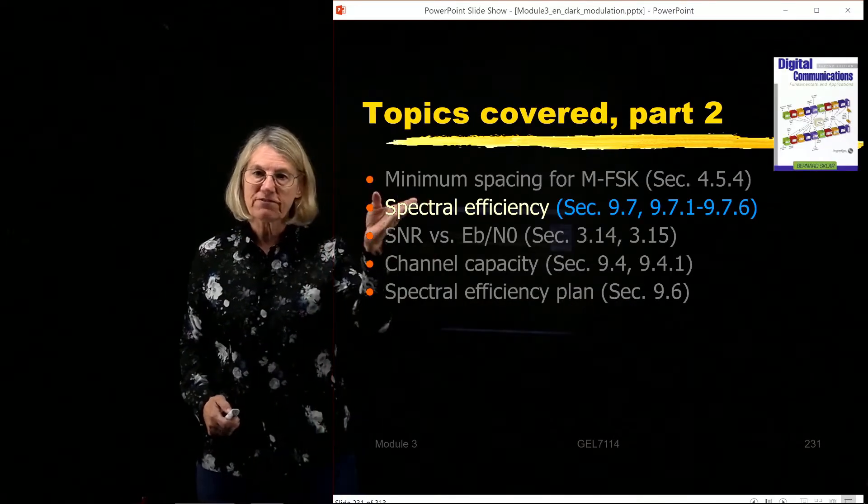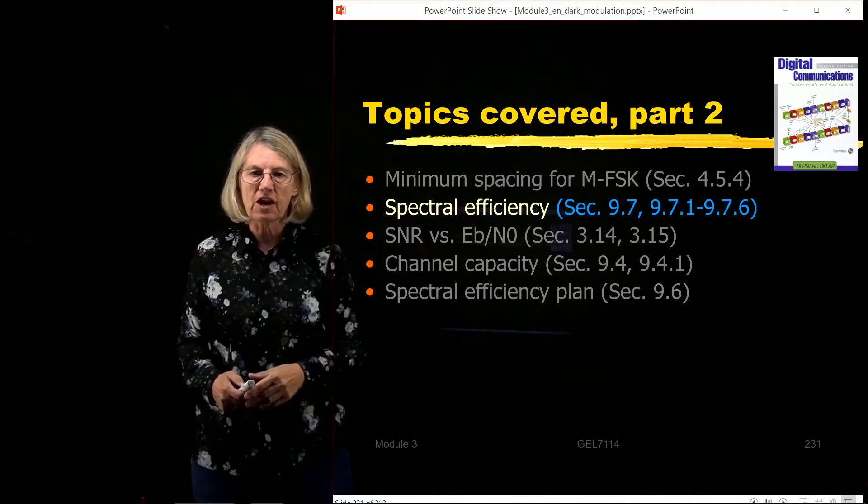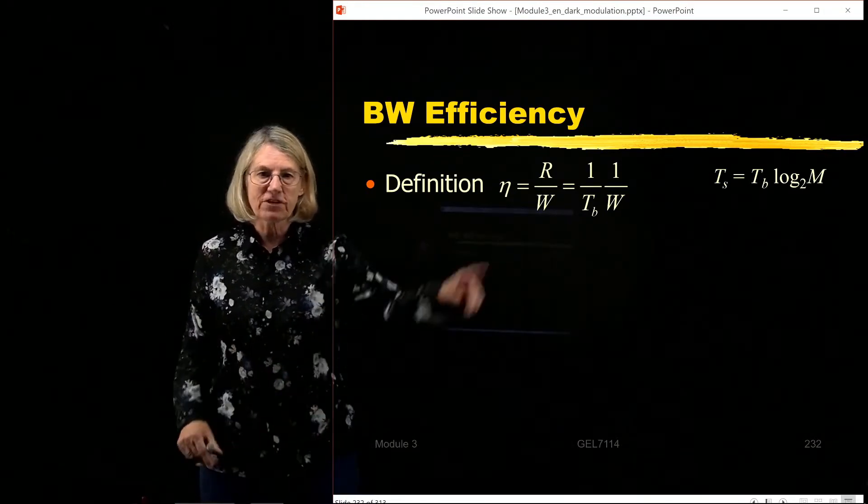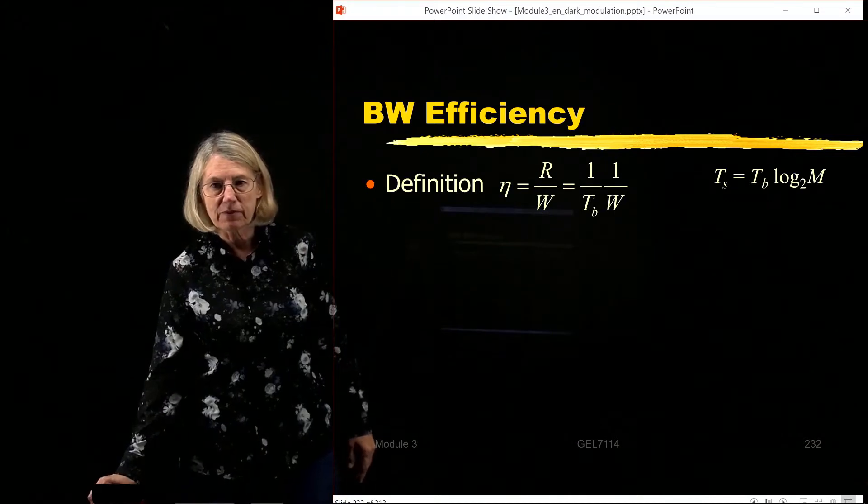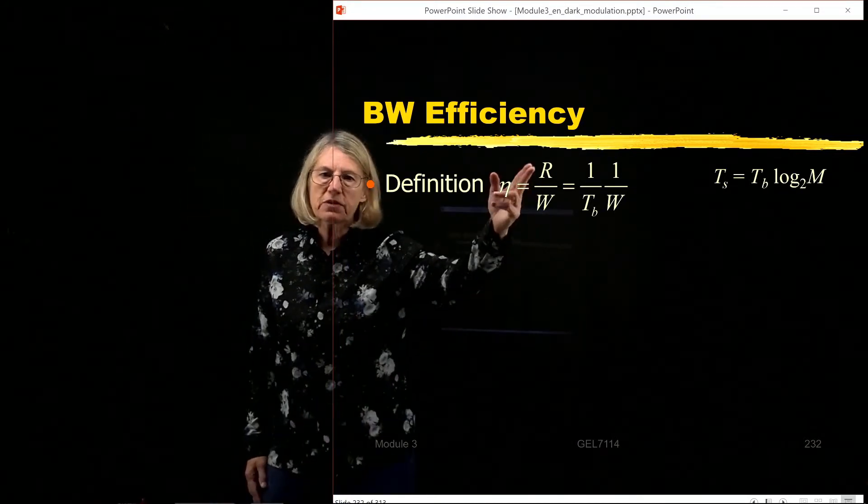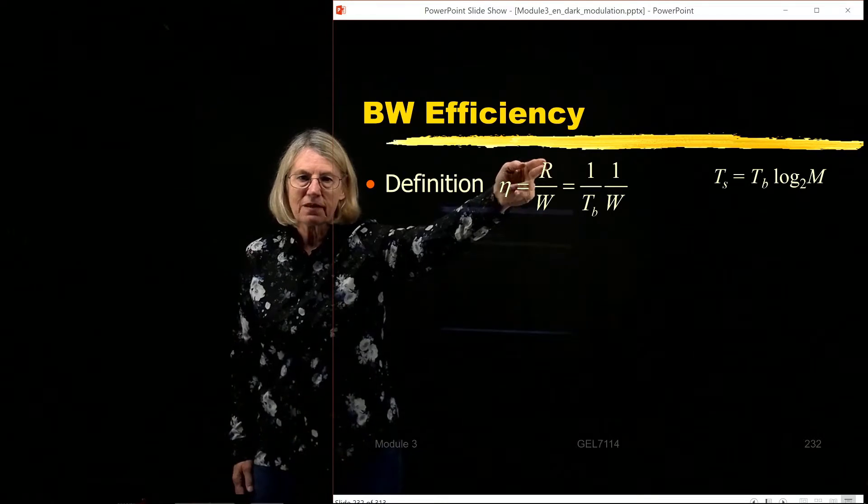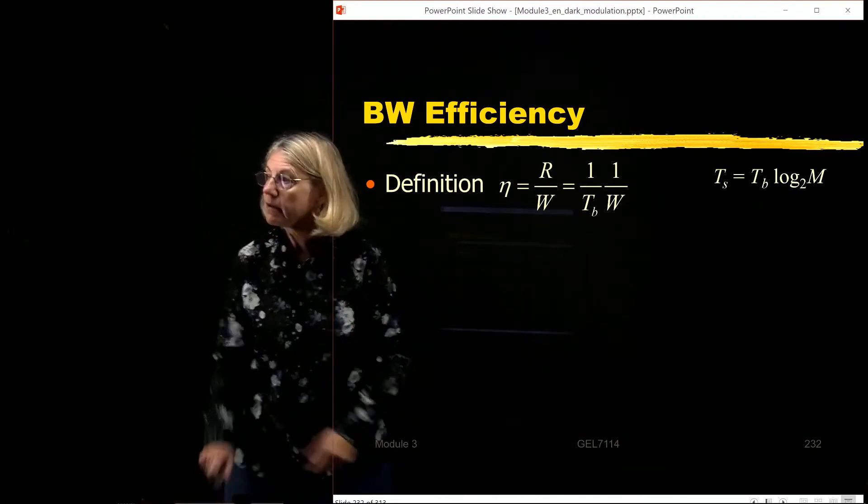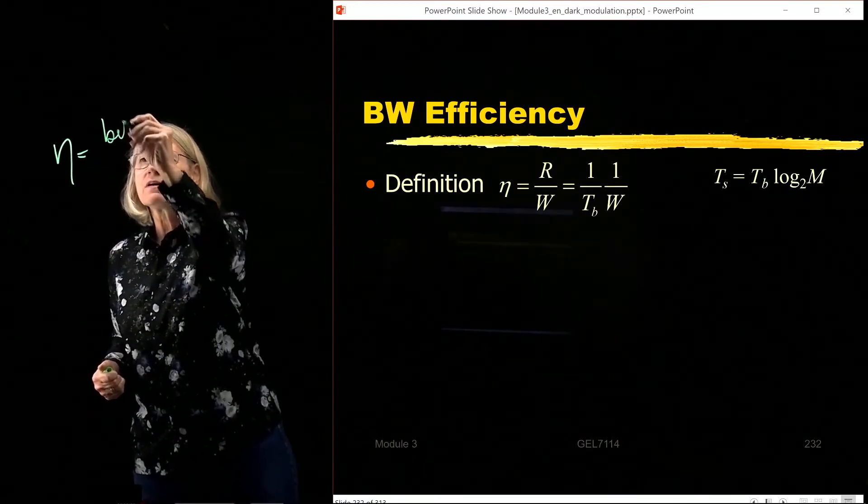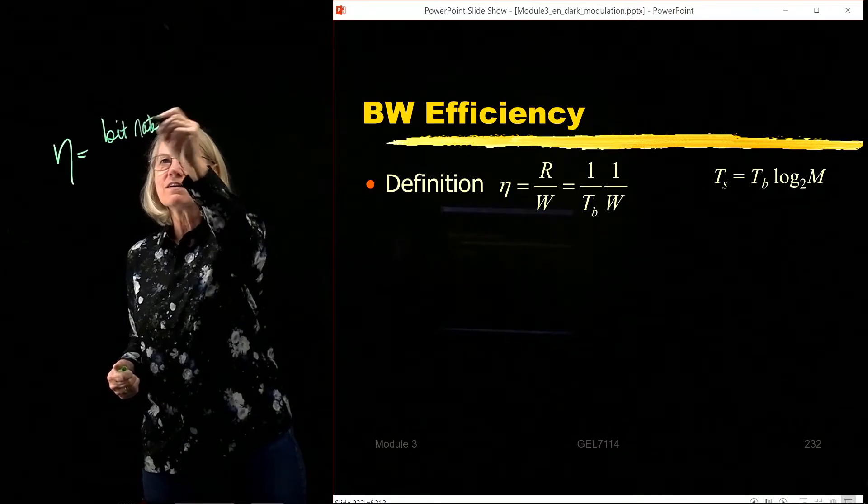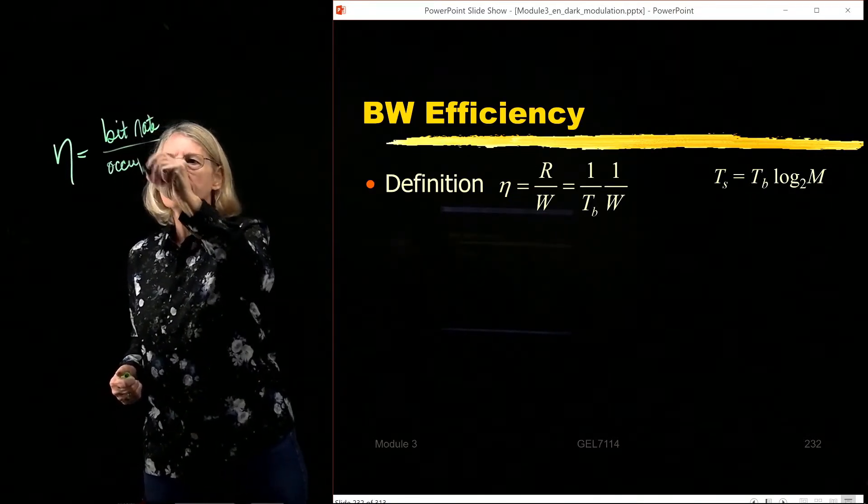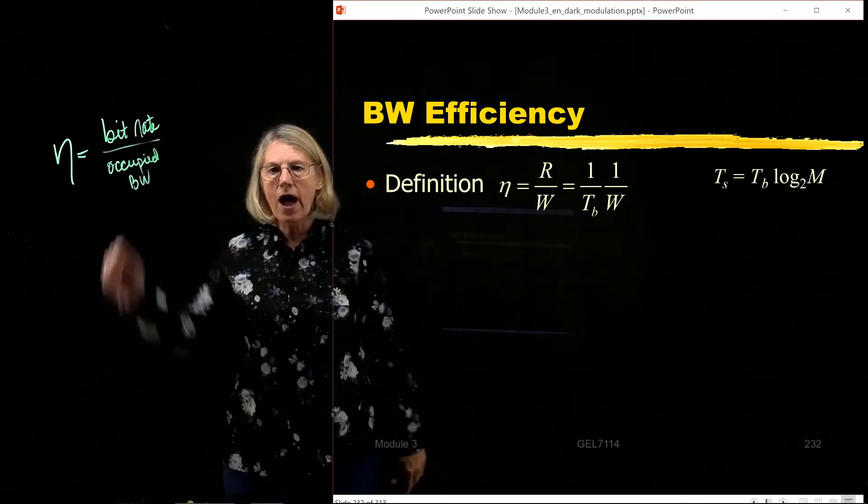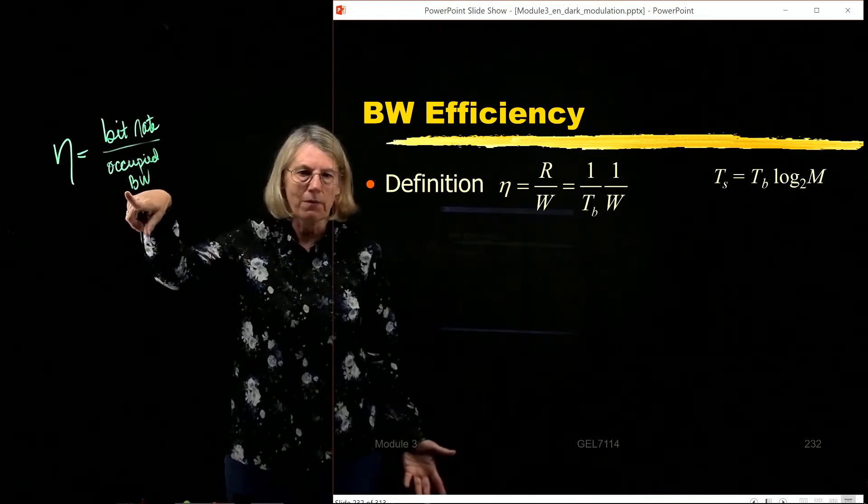Again, spectral efficiency, we're still in the same section of our textbook from Sklar. So I'm going to give a definition now by what I mean by the term spectral efficiency, and I often use the Greek letter eta to represent that. So it's going to be the ratio of the bit rate divided by the occupied bandwidth. So eta is equal to the bit rate divided by the occupied bandwidth. So that's in general a definition, how fast do I have to send through how much spectrum.